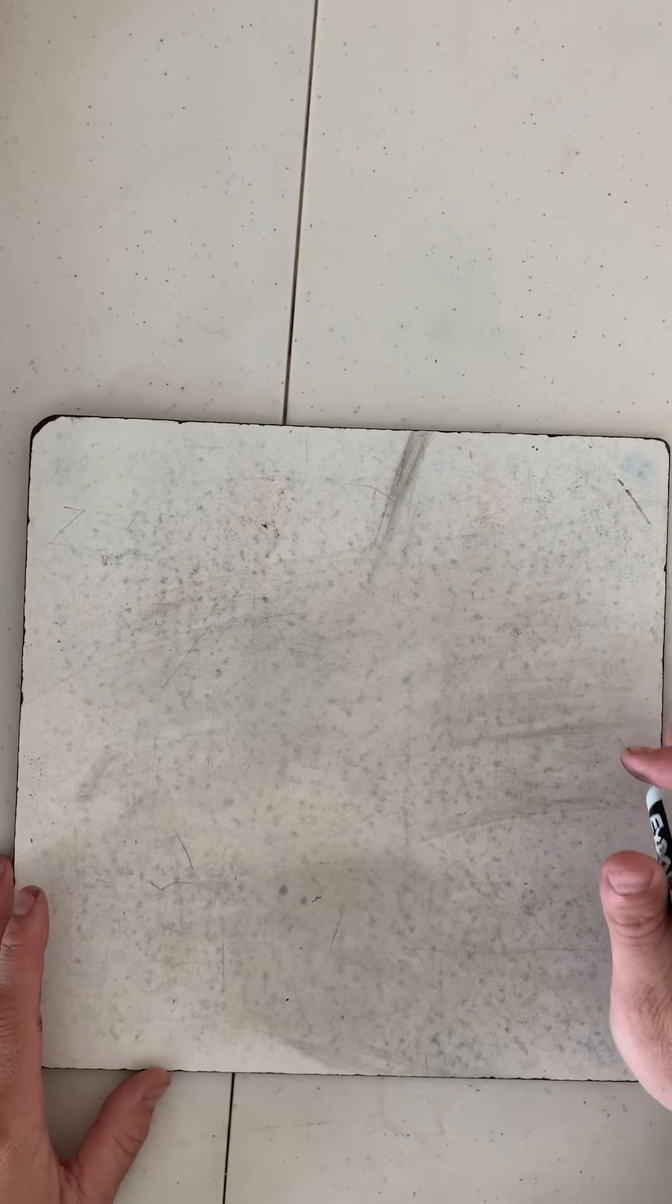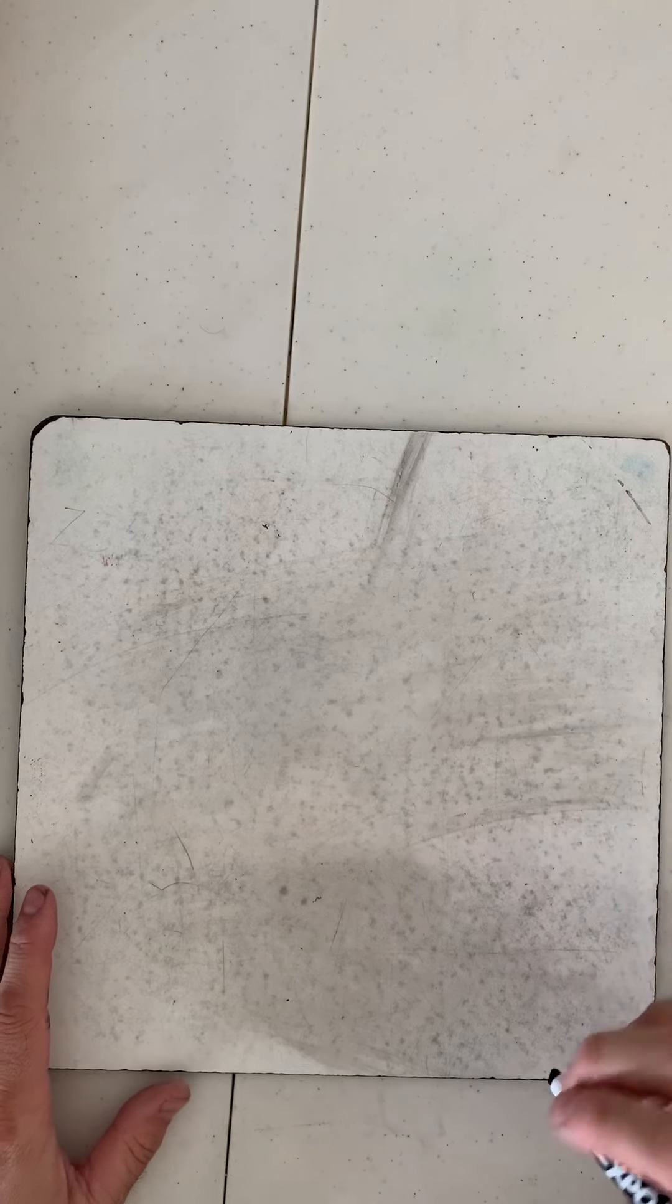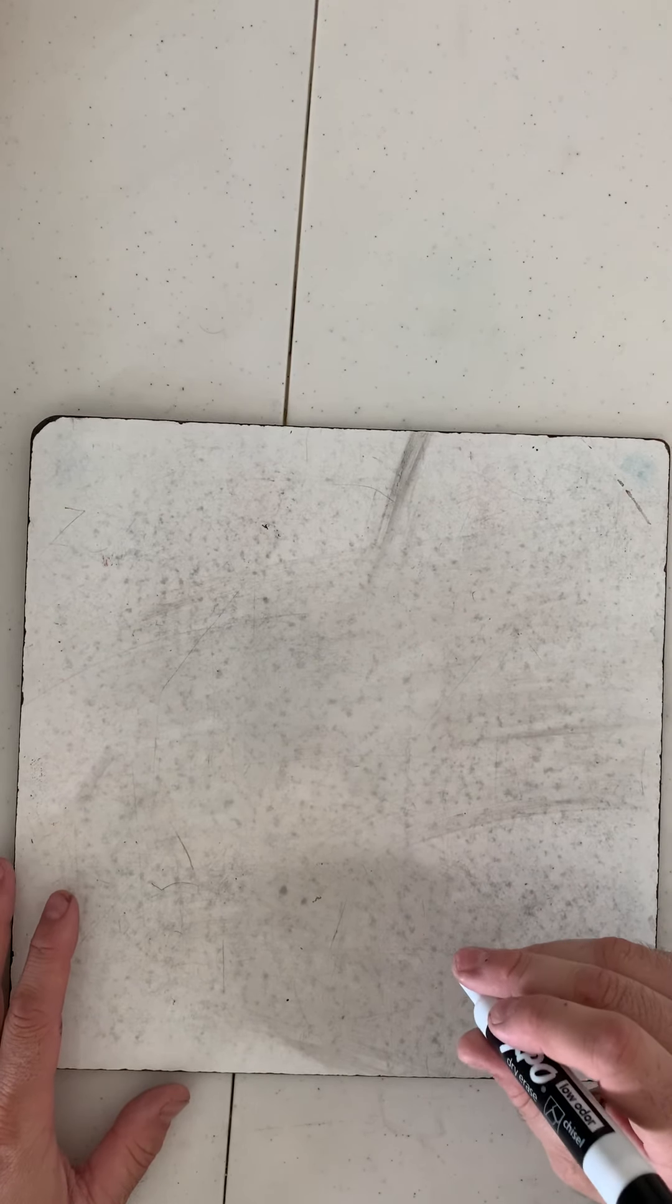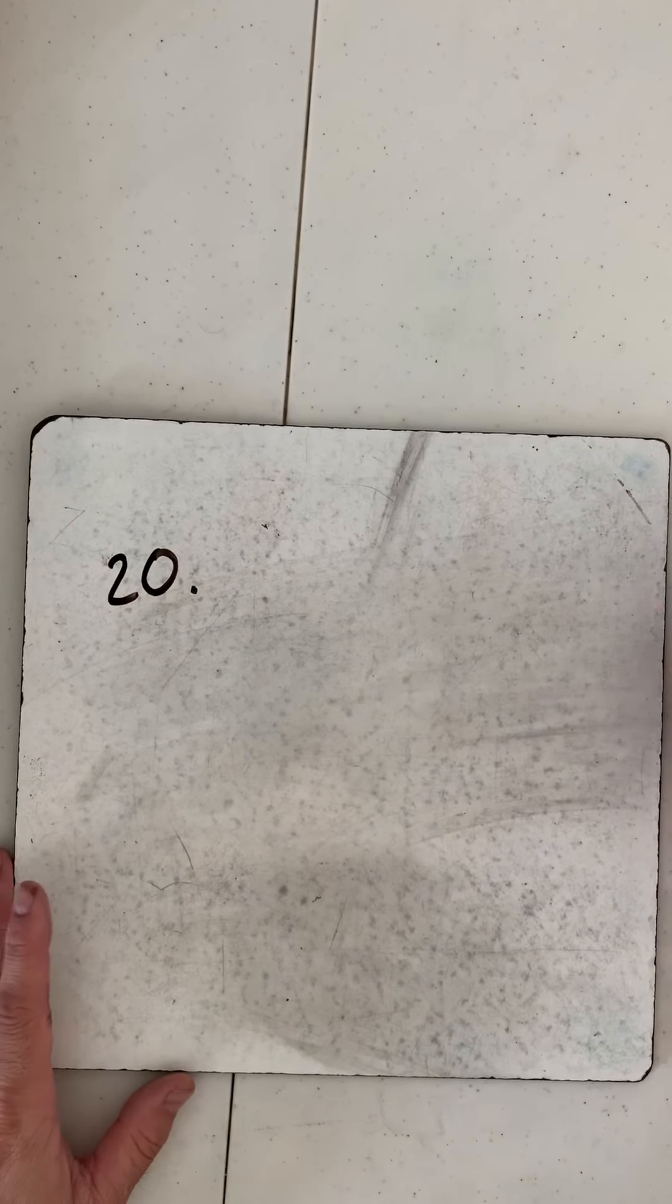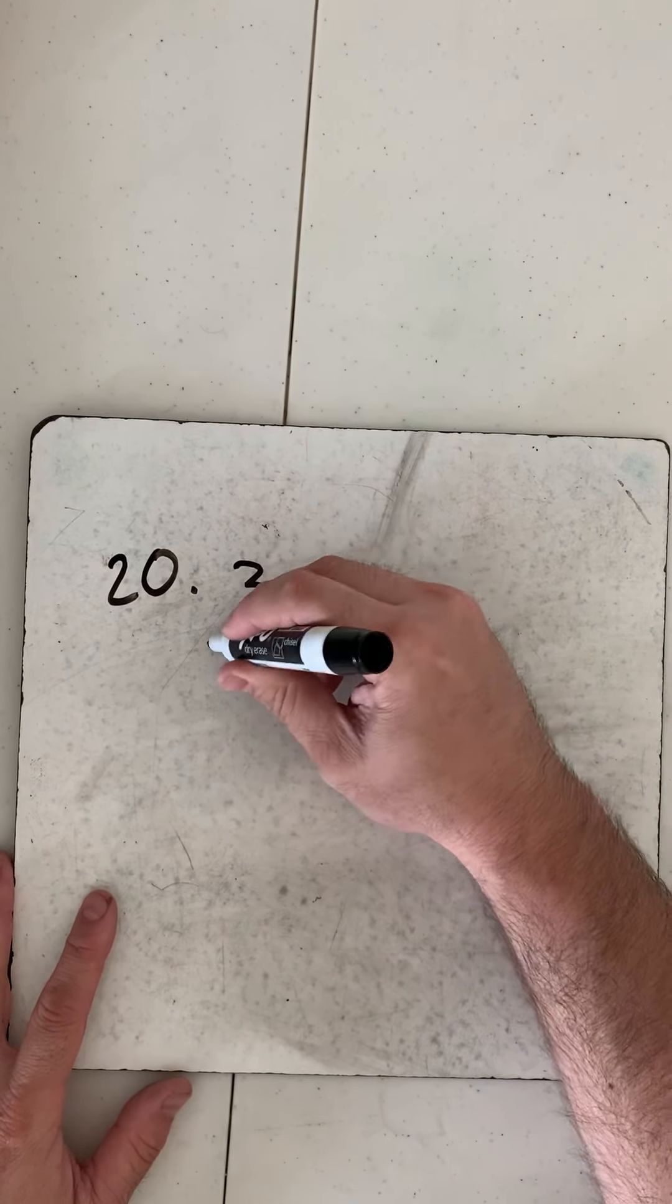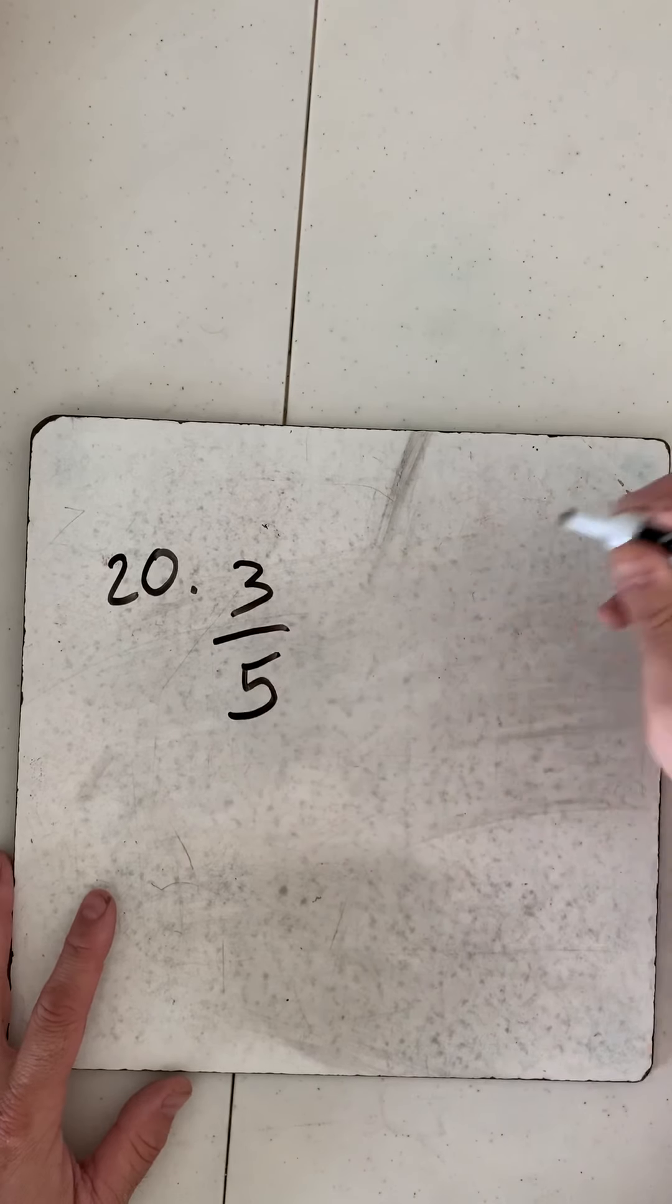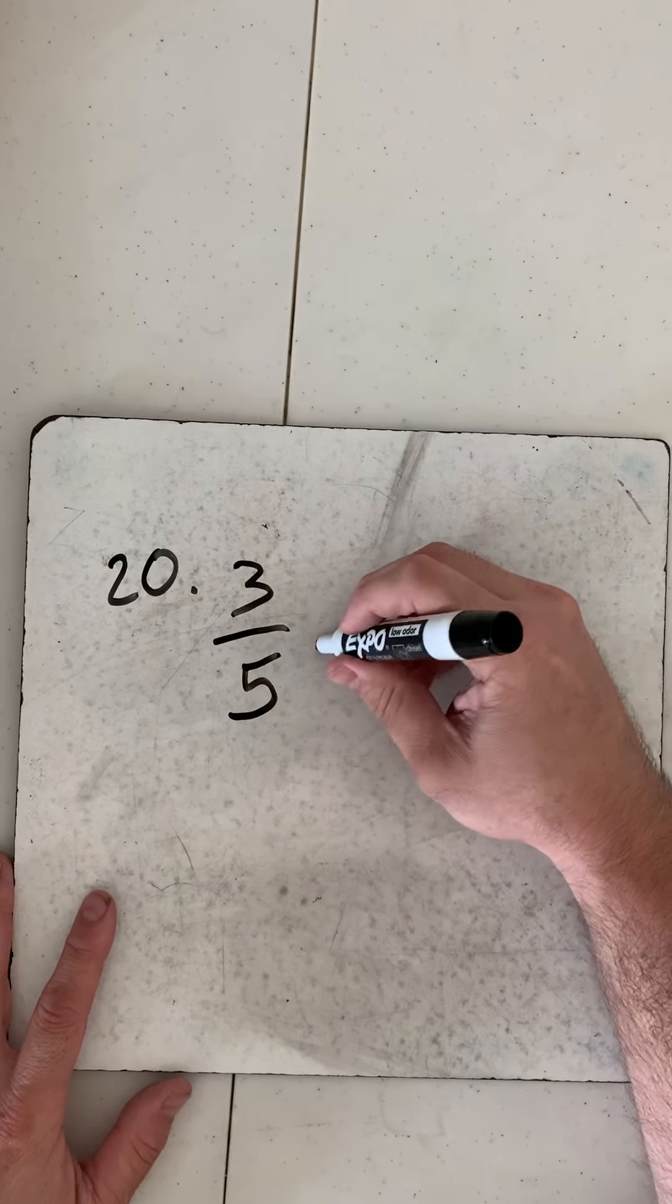Following along on 218, I'm going to take a look at a couple more examples. Next one I want to look at is number 20 on page 219. Number 20, 3/5 divided by 3/10.